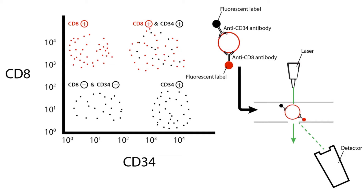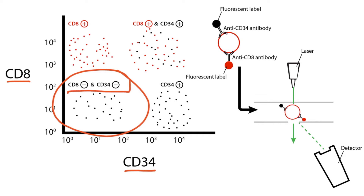On the x-axis we can see the number of CD34 positive cells and on the y-axis we can see the number of CD8 positive cells. Notice that in this quadrant right here there are relatively few cells that contain both CD8 and CD34, so this is considered to be the CD8 negative and CD34 negative quadrant. If we move to the right we can see that this represents the CD34 positive quadrant. If we go up, both CD8 and CD34 are positive, and then if we go to the left from here, you can see that only CD8 is positive.